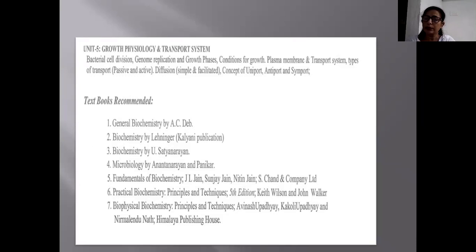The Textbook recommended for the Paper 2 is General Biochemistry by A.C. Dey, Biochemistry by Lehninger, Biochemistry by Satyanarayana, Microbiology by Ananthanarayan and Paniker. Fundamentals of Biochemistry by J.L. Jain, Sanjay Jain, Nitin Jain and Practical Biochemistry by Wilson and John Walker. Biophysical Biochemistry is also important to deal with the principles and techniques.